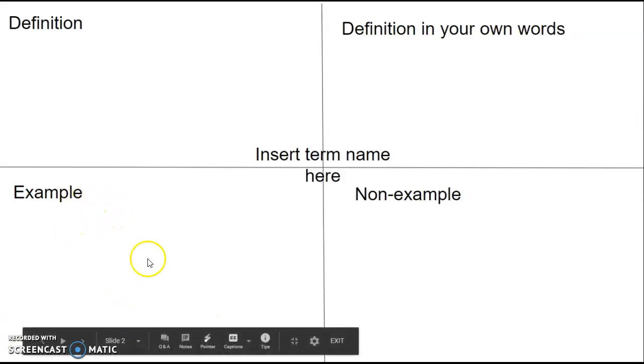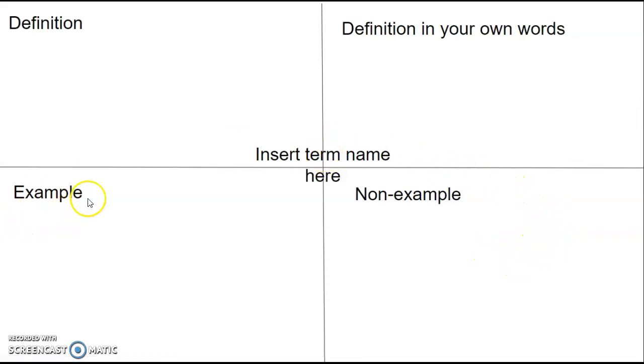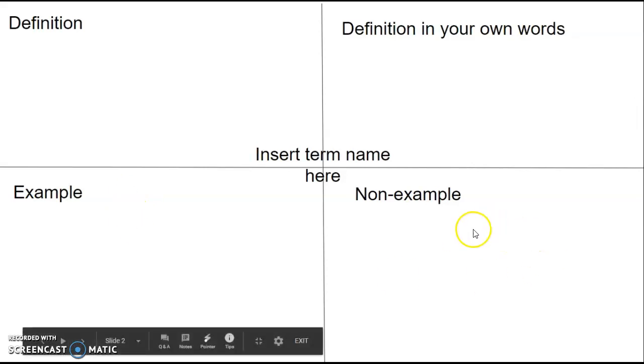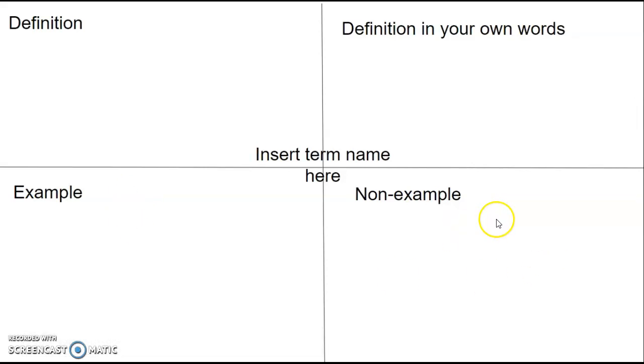And then you'll provide an example or examples down in this box and non-examples in this box. So if I ask you, let's say the term's a negative number, you would put negative five here. For a non-example, you would put the positive, like positive five or ten or whatever.